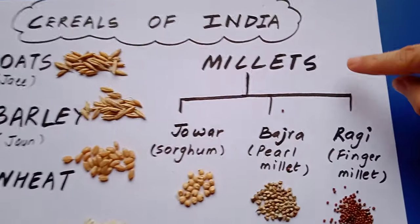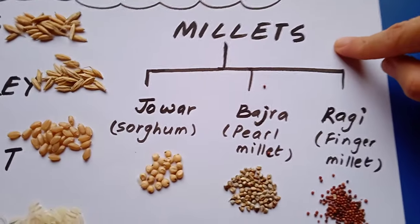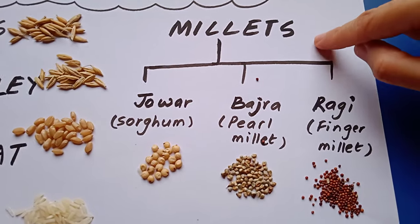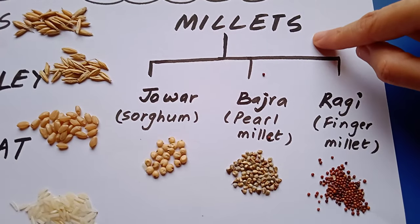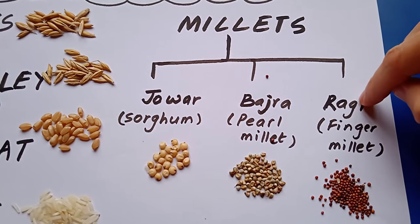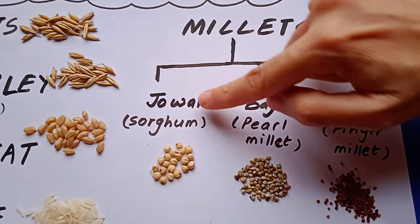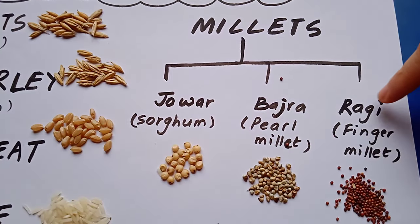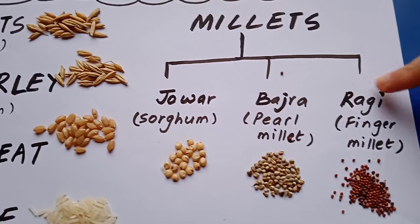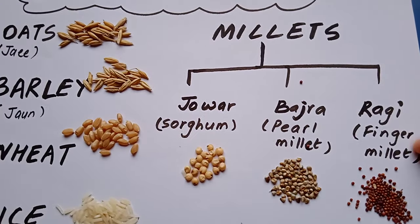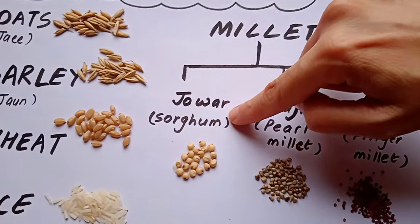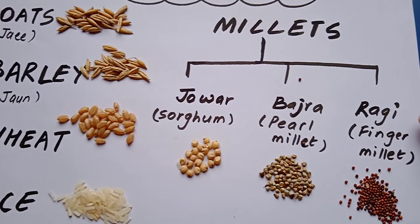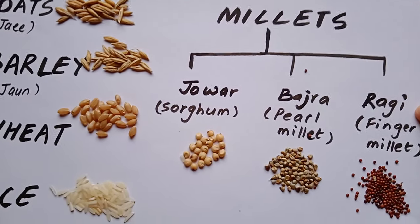Something important here is millets. Generally, we are not aware of what millets are. Millets are also cereals. You can see here - Jowar, Bajra and this is Ragi. These are the English names: Sorghum, Pearl Millet and Finger Millet.